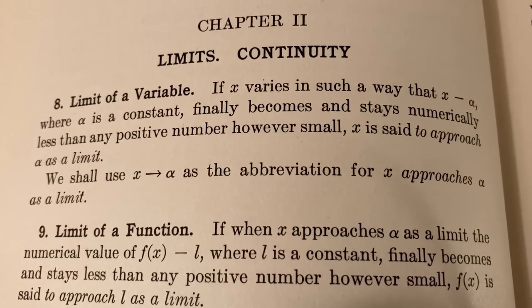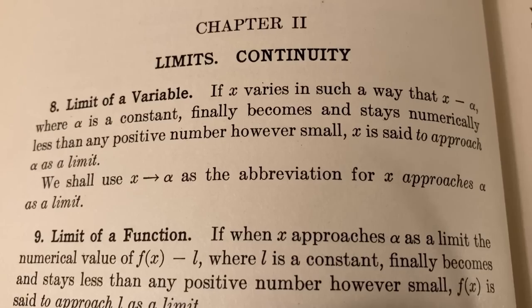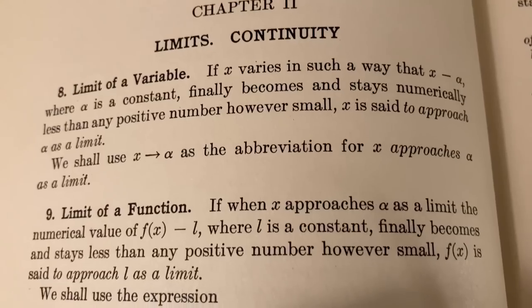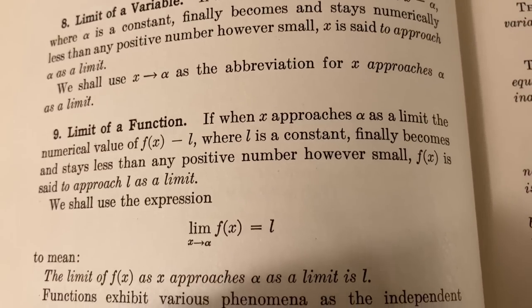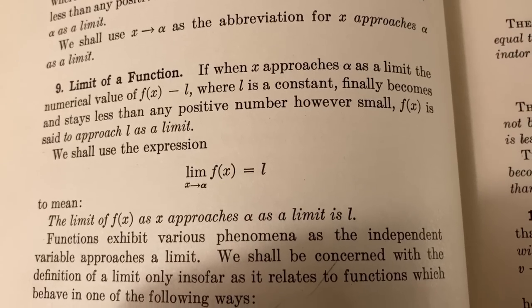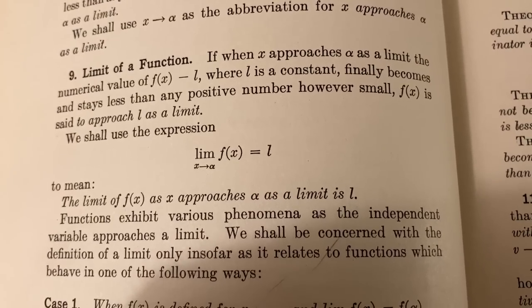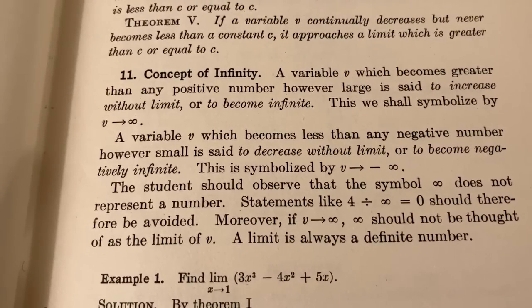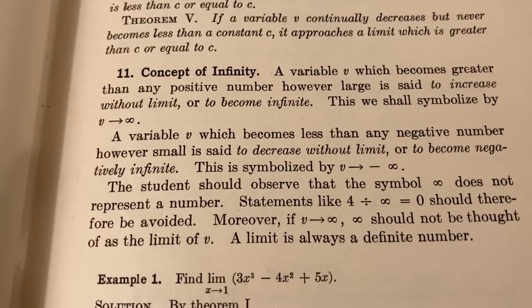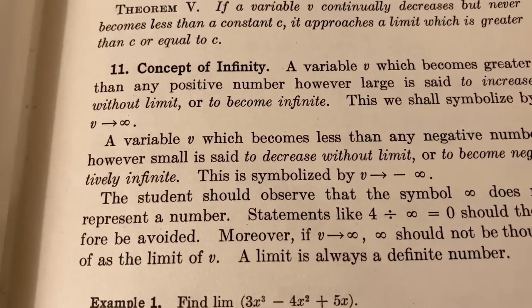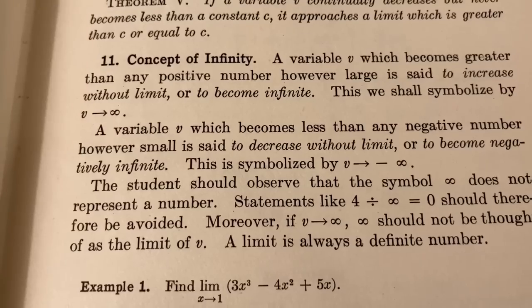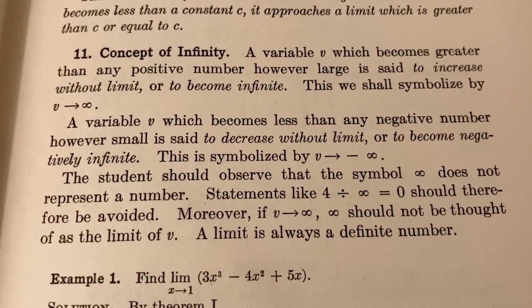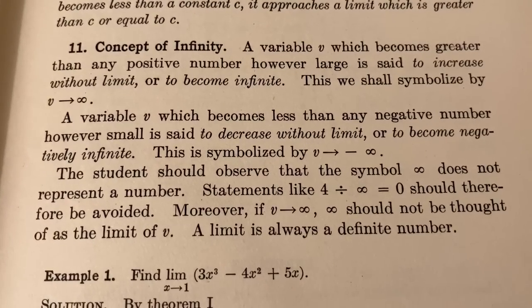And so basically it's saying that when x minus alpha becomes small, as small as you like, we say that x approaches alpha. And then it defines limits using the same language. So it's probably not something that you're used to seeing in a modern book. But I think that's good for you. I think it's good to get different approaches. Here they talk about the concept of infinity. A variable v which becomes greater than any positive number, however large, is said to increase without limit or to become infinite. This we shall symbolize by the symbol v approaching infinity. A variable v which becomes less than any negative number, however small, is said to decrease without limit or to become negatively infinite. This is symbolized by v approaches negative infinity.